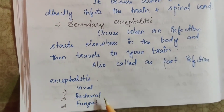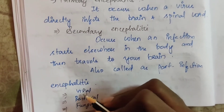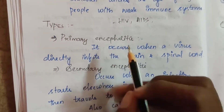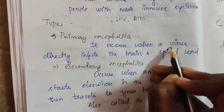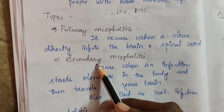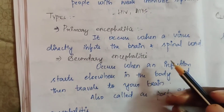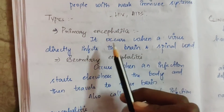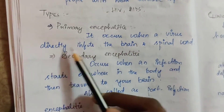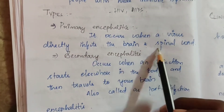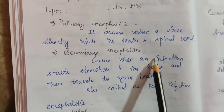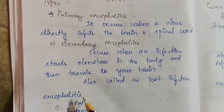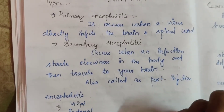Types of encephalitis are viral, bacterial, and fungal — based on their cause. There is also primary encephalitis, where the virus directly infects the brain and spinal cord, and secondary encephalitis, where infection starts elsewhere in the body and then travels to the brain, also called post-infection encephalitis.